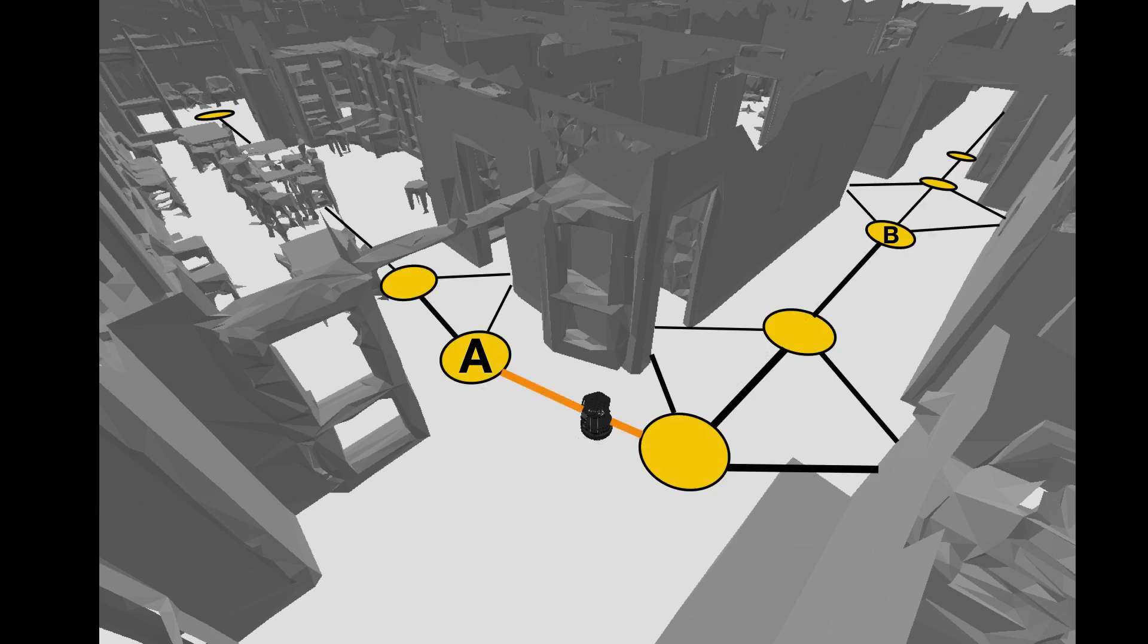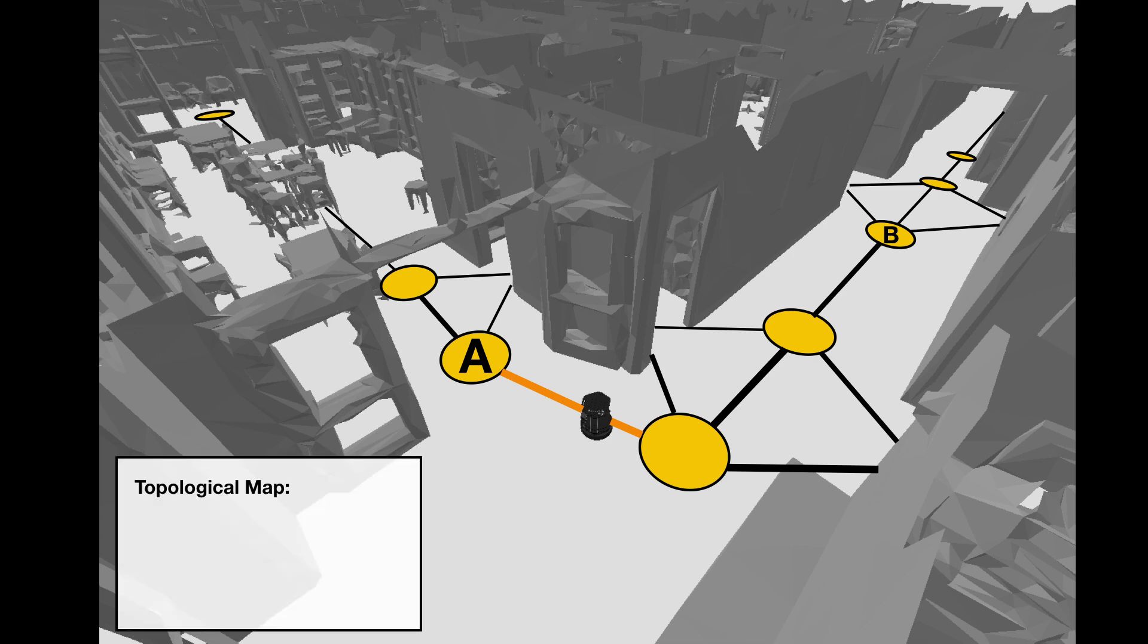Instead of a metric map, we rely on the topology of the environment encoded as a graph. In this graph, the nodes represent locations, and the edges correspond to behaviors that can be executed to traverse from the corresponding source node to the target node.